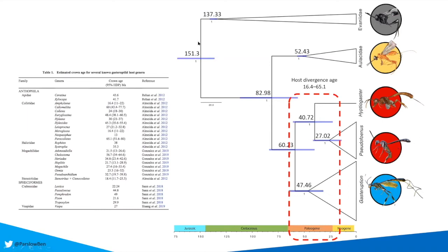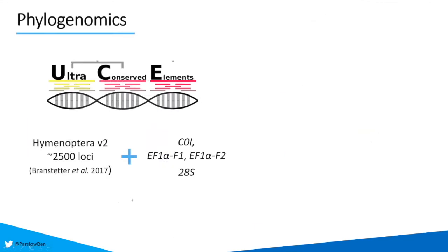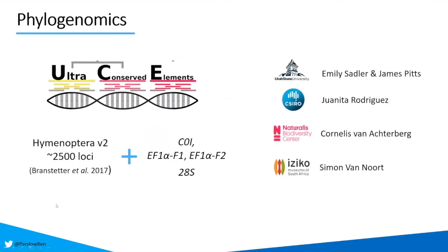Unfortunately, this tree was still lacking support at some backbone components, so we wanted to go further. We started developing a phylogenomic data set using ultra-conserved elements, with the Hymenoptera version 2 bait set and a combination of four other loci: CO1, EF1α, 28S and EF1 beta. I'd like to acknowledge my co-authors on this part of the project who have been helping out with analyses and contribution of specimens.